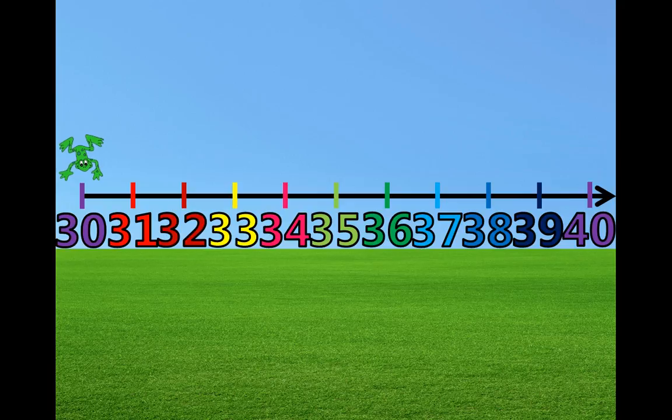This is Froggy the Frog. He likes to jump around on the number line. He's going to help us count from 30 to 40 on the number line. You can help him count too. When he jumps, you can say the number with us.